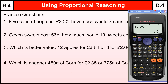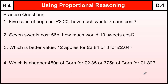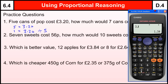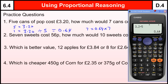Now for some practice questions — you can work through these, pause the video, and then look at how they're done afterwards. Five cans of pop cost £3.20 — how much would seven cans cost? So five equals £3.20, meaning one equals £3.20 divided by five. Using the calculator: 3.20 ÷ 5 = £0.64. So seven cans is 0.64 times seven, which gives us £4.48.